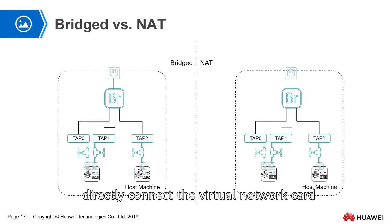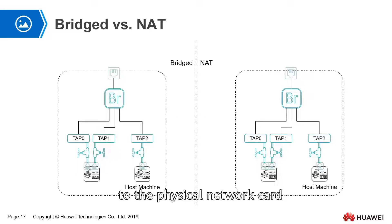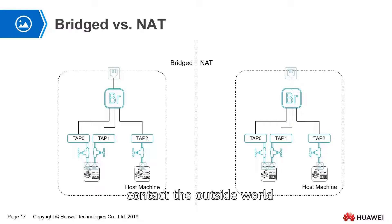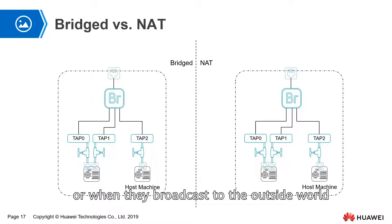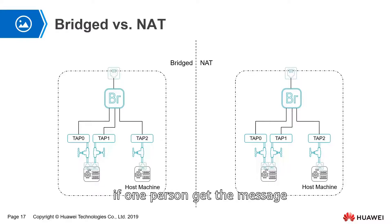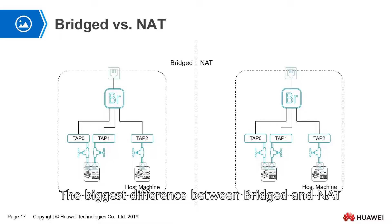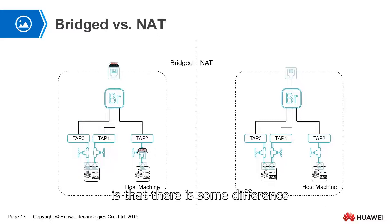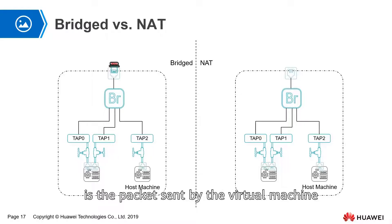Both bridge and NAT directly connect the virtual network card to the physical network card, but they have some differences when forwarding data. When the virtual machine contacts the outside world, even including physical machines, or when they broadcast to the outside world, they will write their own IP address as the source address. The biggest difference between bridge and NAT is that there is some difference in the source address. In bridge, the source address of the packet sent by the virtual machine is not modified.